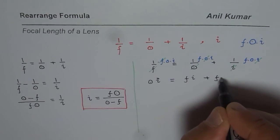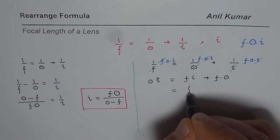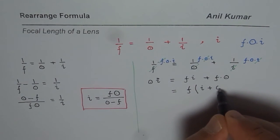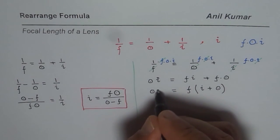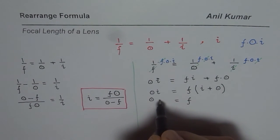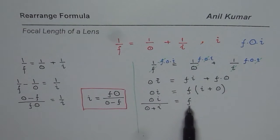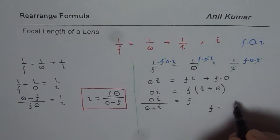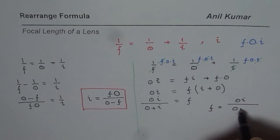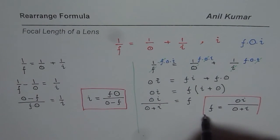On the right side we can factor out F, giving F times (I plus O). We can then divide both sides by (I plus O), so F equals the product of object and image distance divided by the sum of object and image distance. That is how you can directly calculate the focal length. Focal length is a quotient of the product and sum of object and image distances.